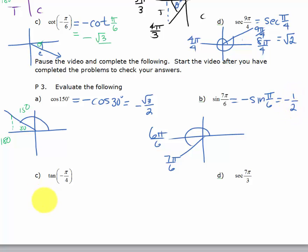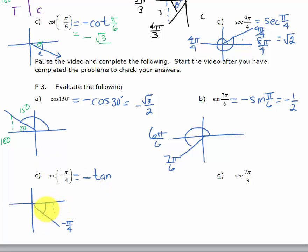Now I'm going to draw negative π/4. That brings me into the fourth quadrant. Using 'all students take calculus,' tangent is negative in the fourth quadrant. So I'm going to have the opposite of the tangent of whatever my reference angle is. My reference angle is the positive acute value, which is positive π/4. So we're going to get the opposite of the tangent of π/4, which is negative 1.